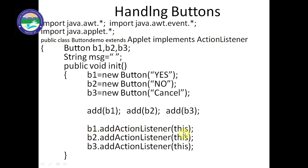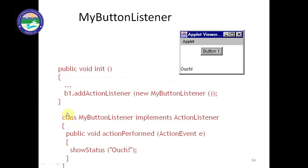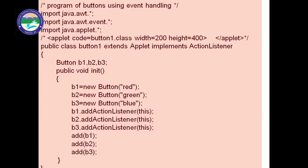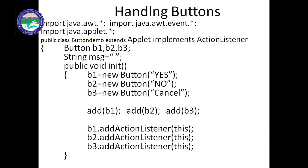As you can see in this snapshot: b1.addActionListener with the object of a different class is used when a separate class like MyButtonListener implements ActionListener. If the same class implements ActionListener, we write 'this' keyword — meaning b1.addActionListener(this). If it's a different class, we write the object of that class: 'new MyButtonListener()'. These are the two different program approaches. Here we have added the ActionListener accordingly.